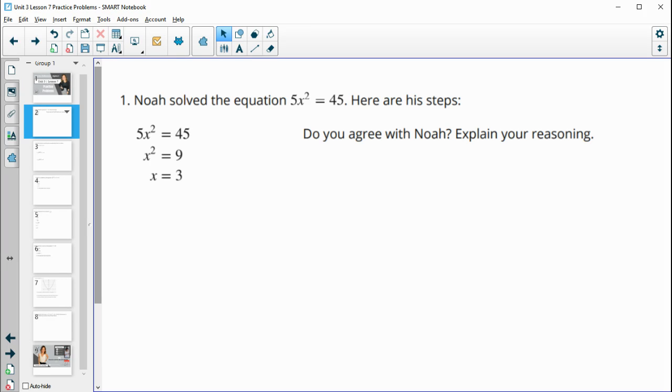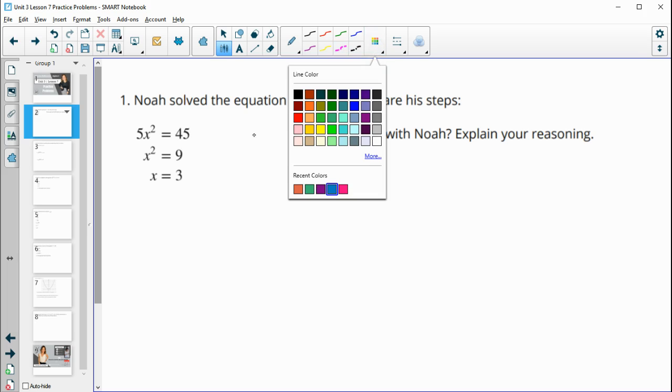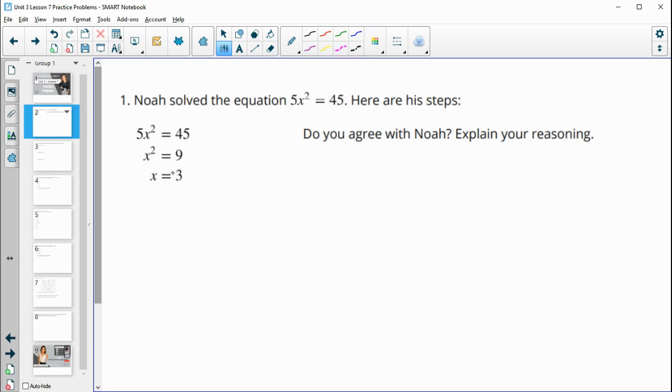Number one says, Noah solved the equation 5x squared equals 45. Here are his steps. Do you agree? Explain your reasoning. So certainly three is a solution because we can do three times three is nine and nine times five is 45. So this is certainly a solution.